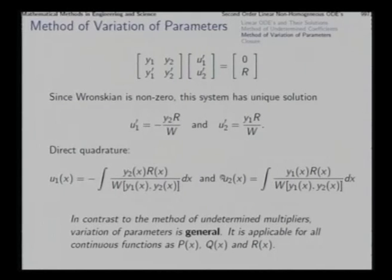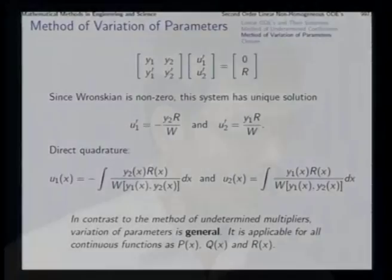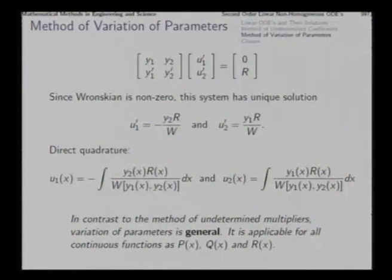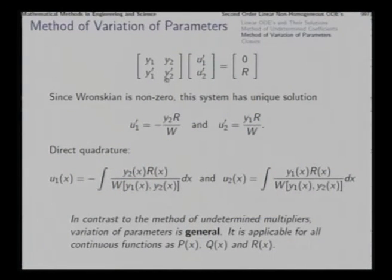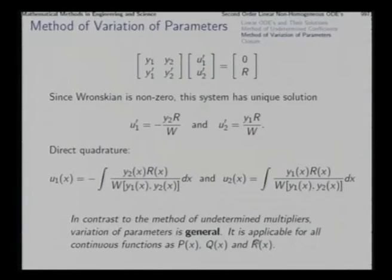This is the method of variation of parameters to find the solution of the non-homogeneous differential equation in a general situation. The first step is to find the complete solution of the corresponding homogeneous equation. This method is applicable for all functions p(x), q(x), and r(x) which are continuous and bounded, and it is valid only for the interval in which these functions remain so.